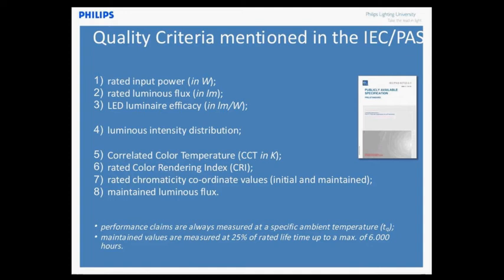What is mentioned in the international standard are those eight quality criteria: the rated input power, rated luminous flux, and from those we can calculate the LED luminaire efficacy. Some people question whether lumens per watt for a luminaire is really the way to go forward, but it's used today. You will also find luminous intensity distribution - how the light comes out of your luminaire - which is the input for your lighting calculations. And there are four more quality-of-light related parameters: CCT, CRI, but also the rated chromaticity coordinates and the maintained luminous flux. For those familiar with the lighting industry, it is not really something new.